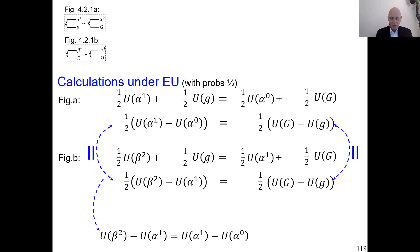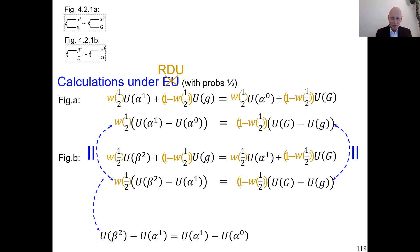Now we have to do more general rank-dependent utilities. In the first indifference, we have to say the rank-dependent utility of these two lotteries are the same. We write the rank-dependent utility of the left lottery, bring in the W. We've seen it before with the alphas. And still, same right-hand side, same left-hand side. The common weight is W of half. It still cancels, so we keep on having this equality of utility differences. That's the common reasoning usually presented.